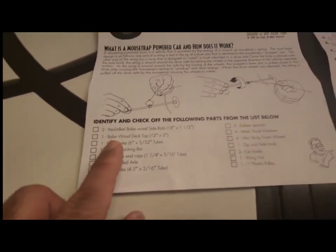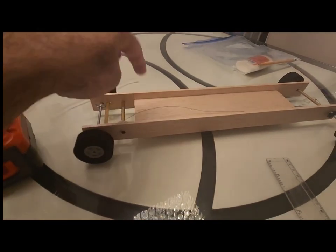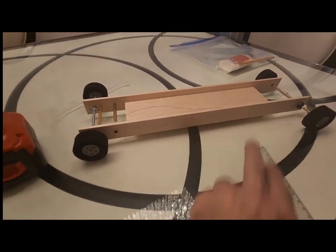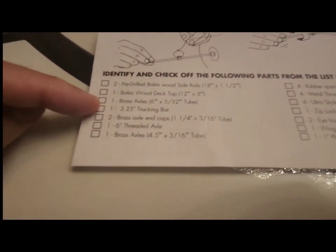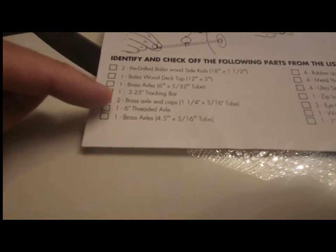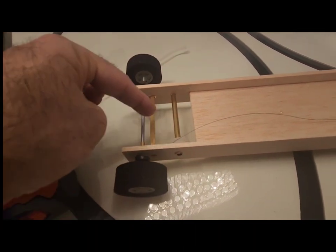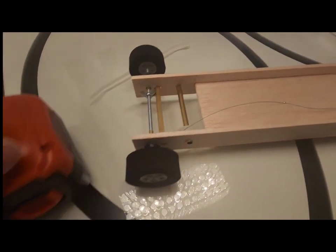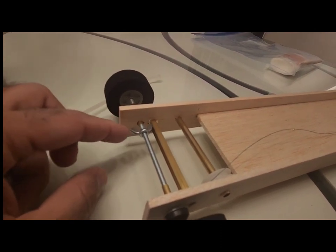Then it says one balsa wood deck top - this is the deck top, the main board of the vehicle. There's one brass axle and a tracking bar. These are the axles, this is a tracking bar, and this is a wing nut.